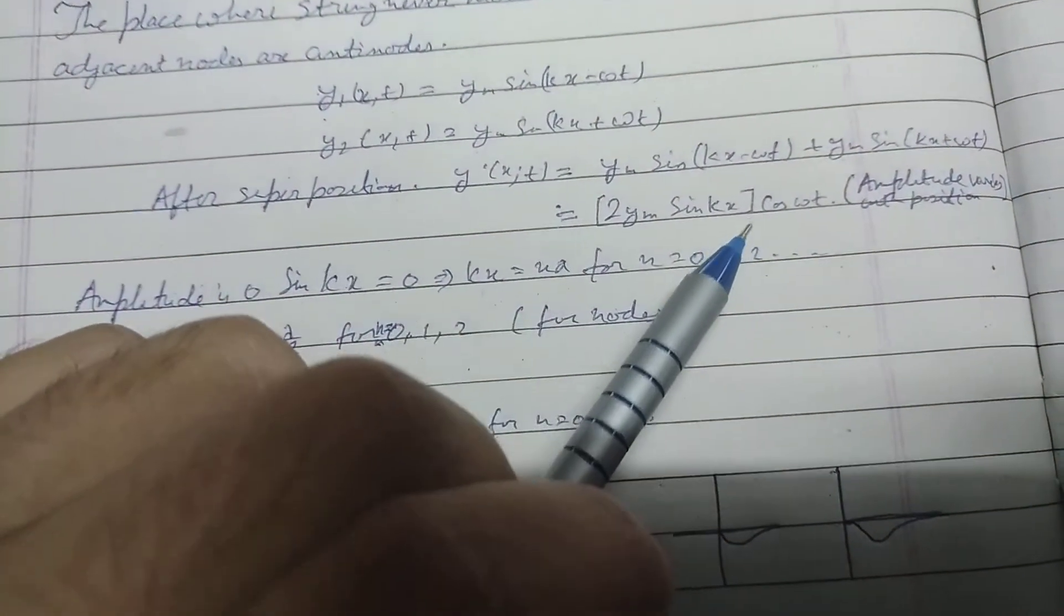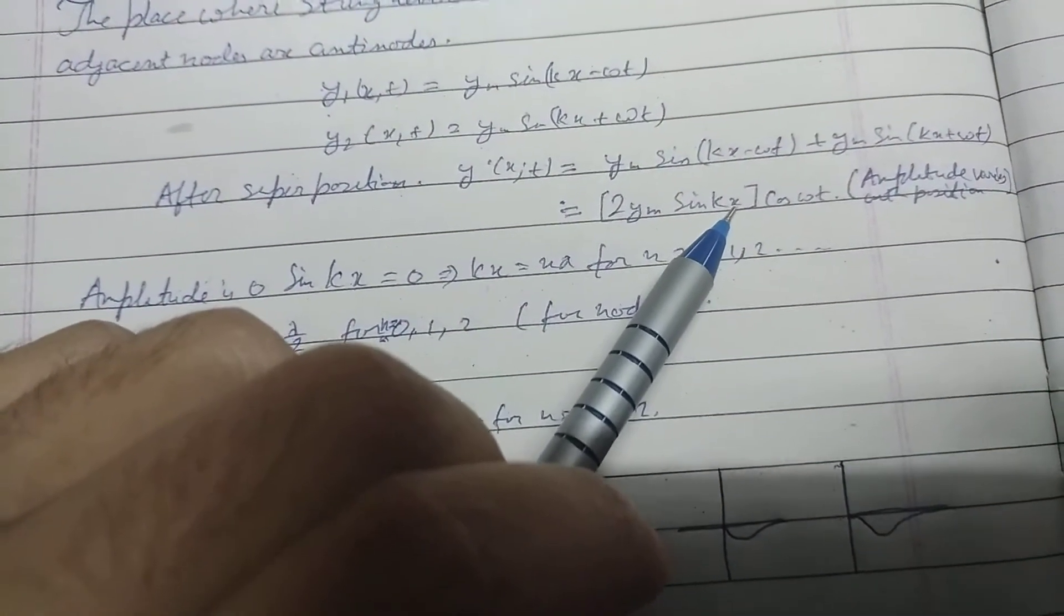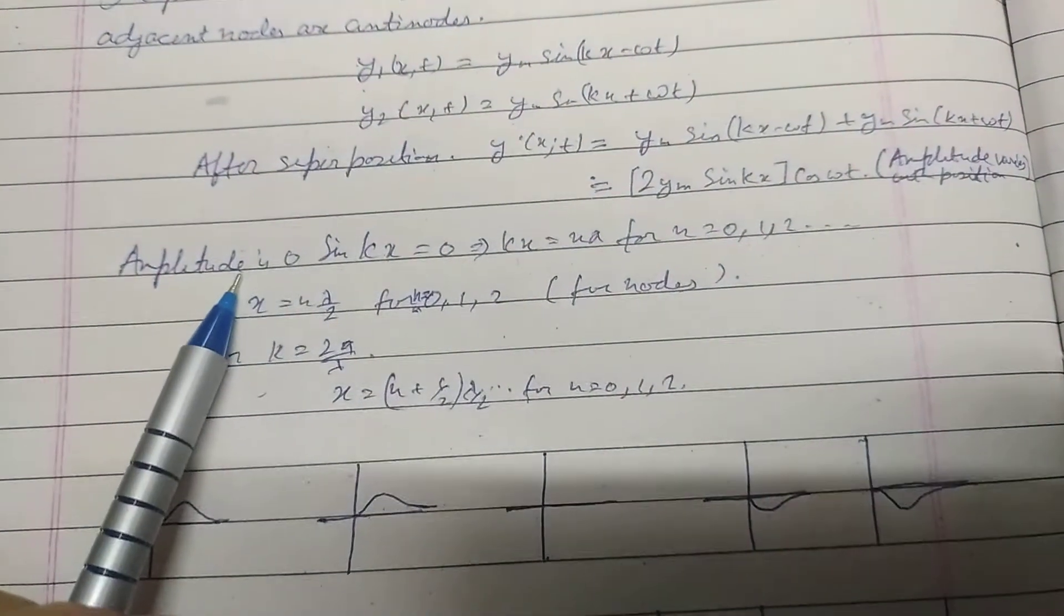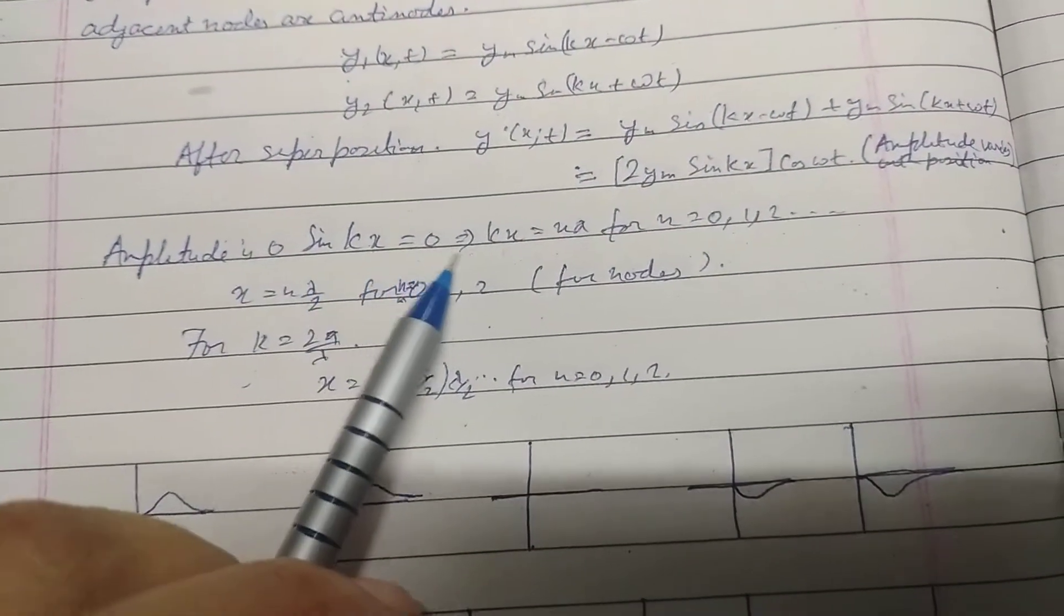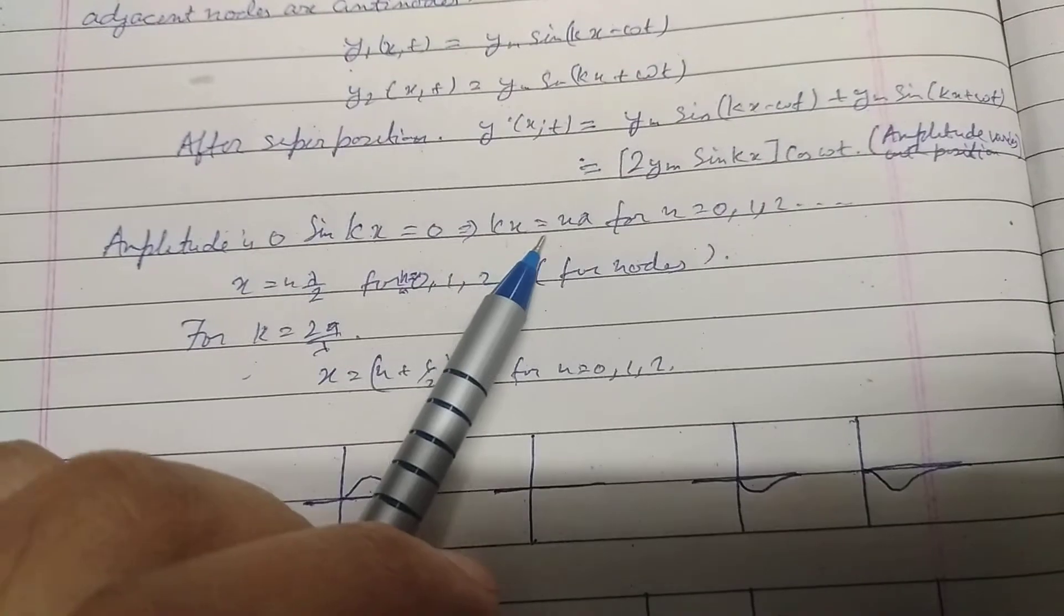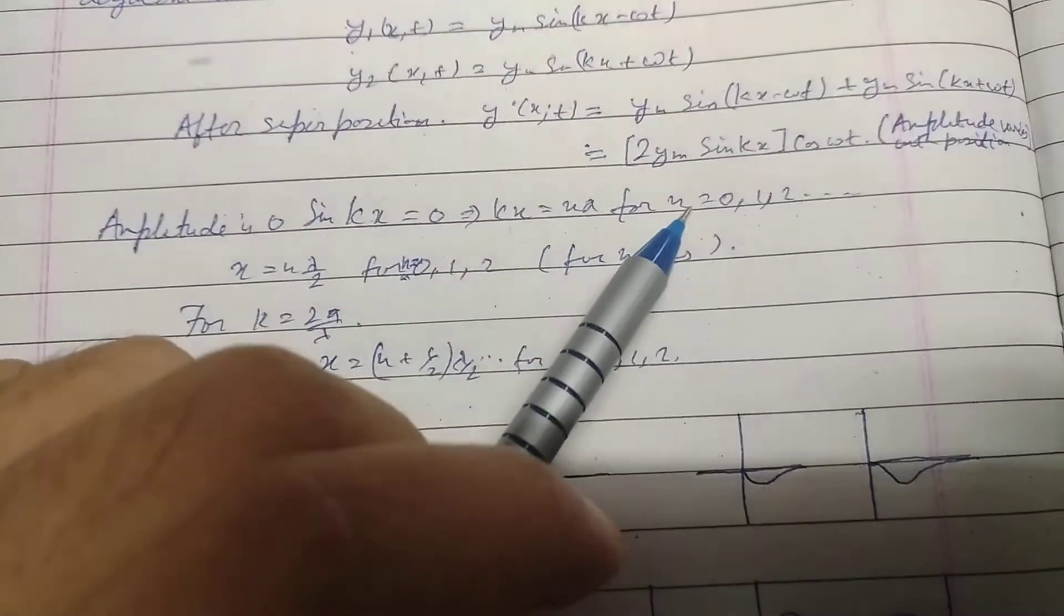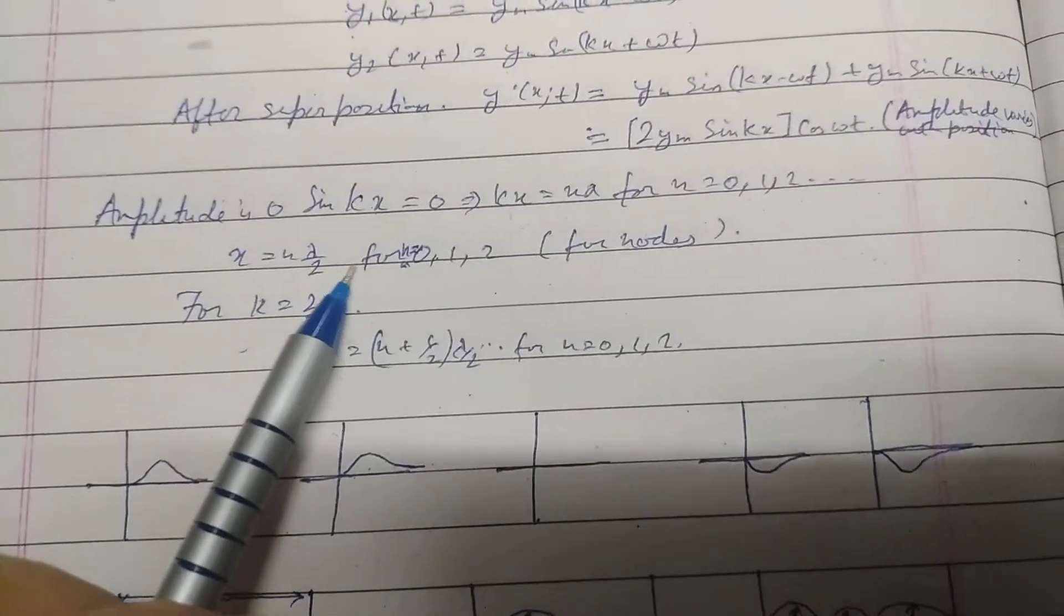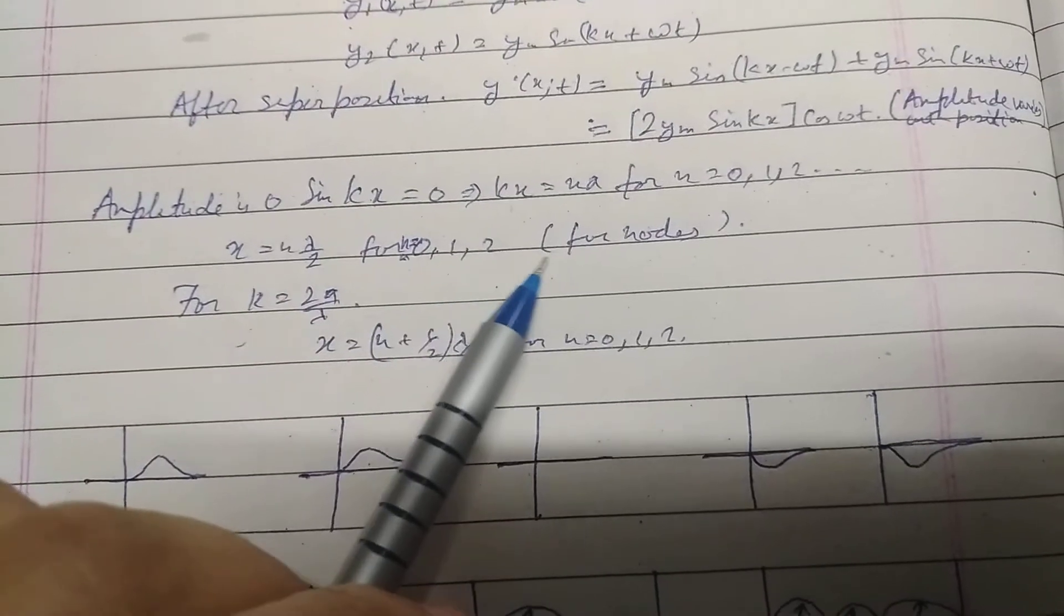Amplitude varies with position as amplitude contains the variable position x. Amplitude is 0 when sin(kx) equals 0, and kx equals n pi for n equals 0, 1, 2. Therefore x equals n lambda by 2 for n equals 0, 1, 2 for nodes.